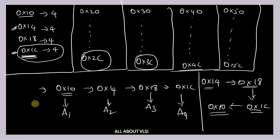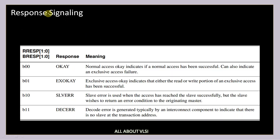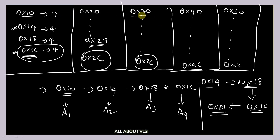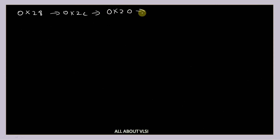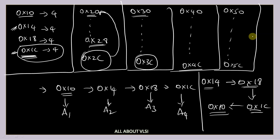Let's take one more example. If the starting address is 0x28, the next address is 0x2C. Then, because we are in wrapping burst mode, we do not go to 0x30. Instead, we wrap back to the initial address of that particular range, which is 0x20, followed by 0x24. In the case of incremental burst, you just keep incrementing addresses by the size, but in wrapping burst, upon reaching the address boundary of a range, you wrap back to the initial address of that range.